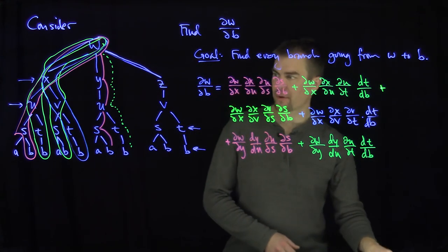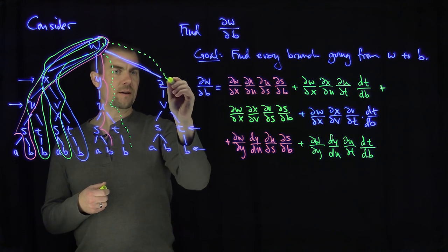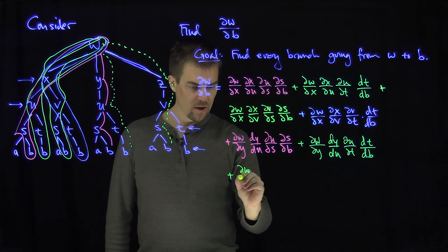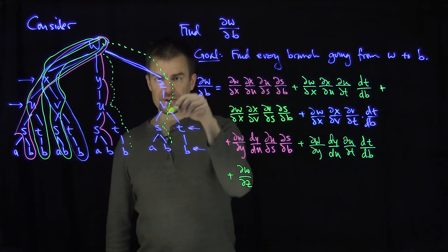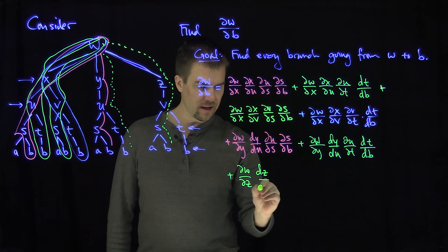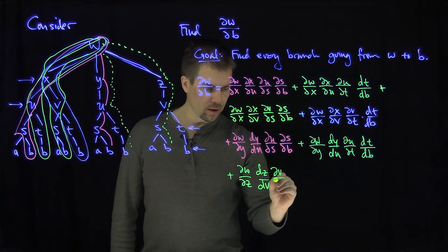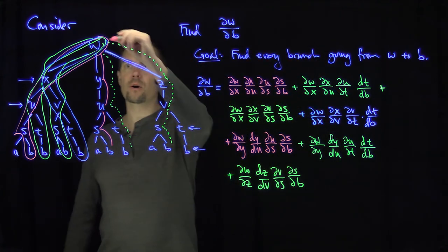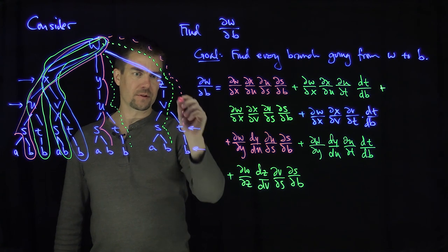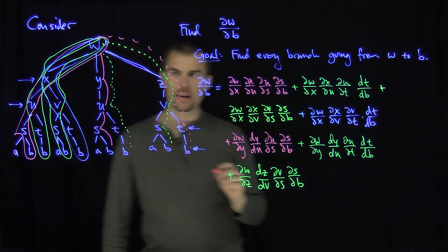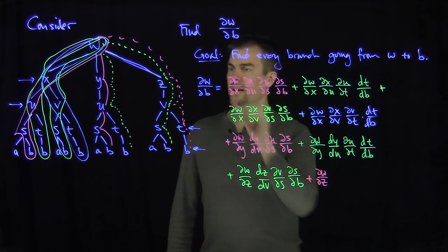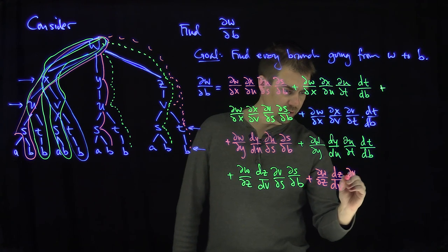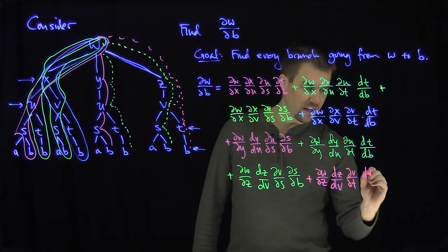Finally, we go through the z branch. The trajectory w→z→v→s→b gives: plus partial w partial z, times dz dv (ordinary derivative since z is a function only of v), times partial v partial s, times partial s partial b. The trajectory w→z→v→t→b gives: plus partial w partial z, times dz dv, times partial v partial t, times dt db.